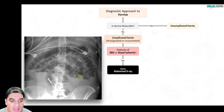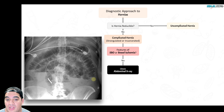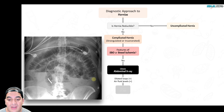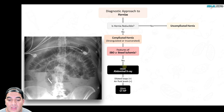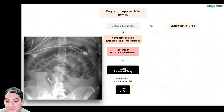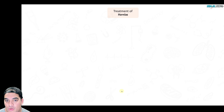If the abdominal X-ray shows dilated bowel loops and air-fluid levels, the hernia has progressed to a bowel obstruction. Also check a lactate level — significantly elevated lactate suggests bowel ischemia. If there's evidence of obstruction, the best follow-up test is a CT of the abdomen and pelvis, which can identify an incarcerated or strangulated hernia.